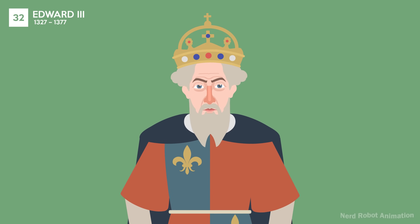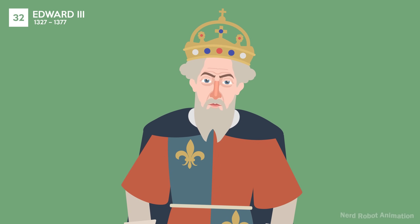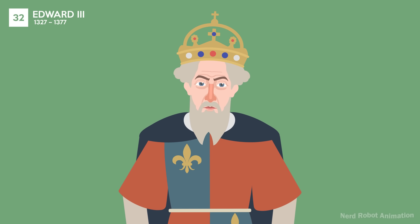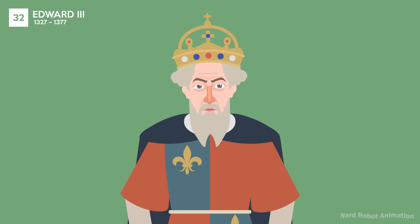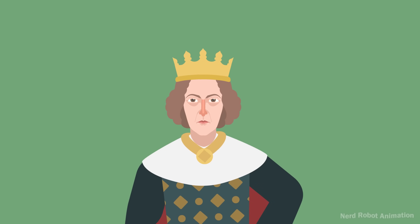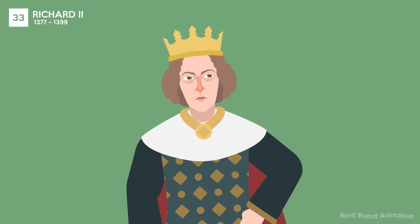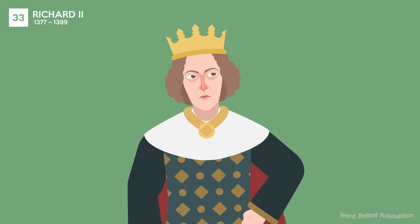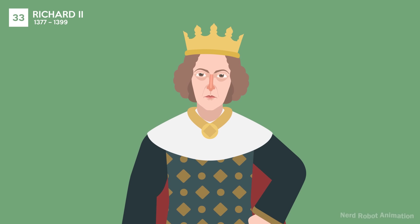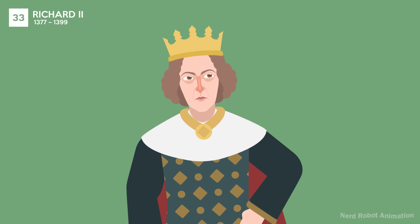Edward III's reign saw the start of the Hundred Years' War and the rise of the English Parliament. His numerous sons led to later dynastic conflicts. Richard II's reign ended in his deposition by Henry IV due to his tyrannical rule and favoritism. His dramatic downfall led to his mysterious death in captivity.